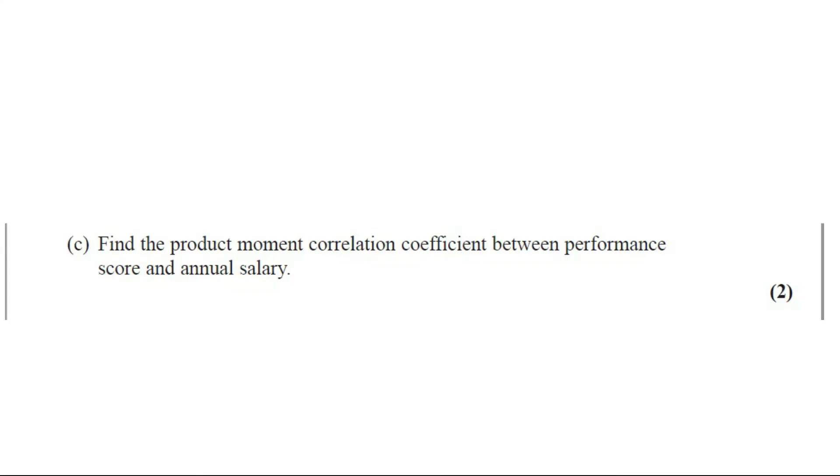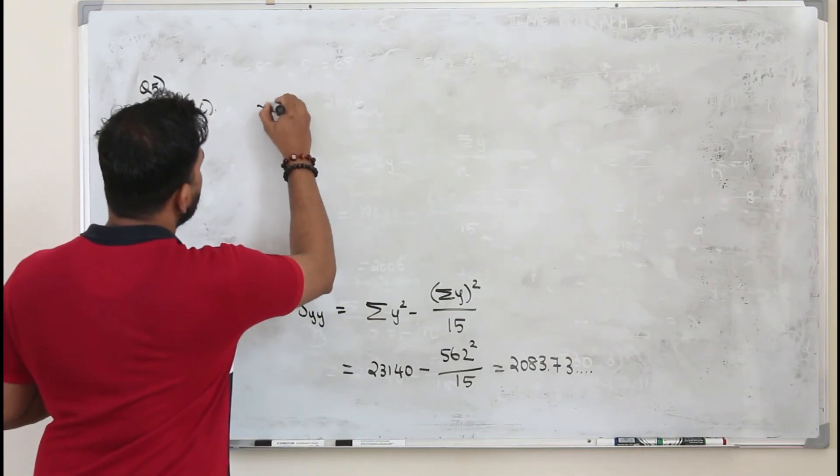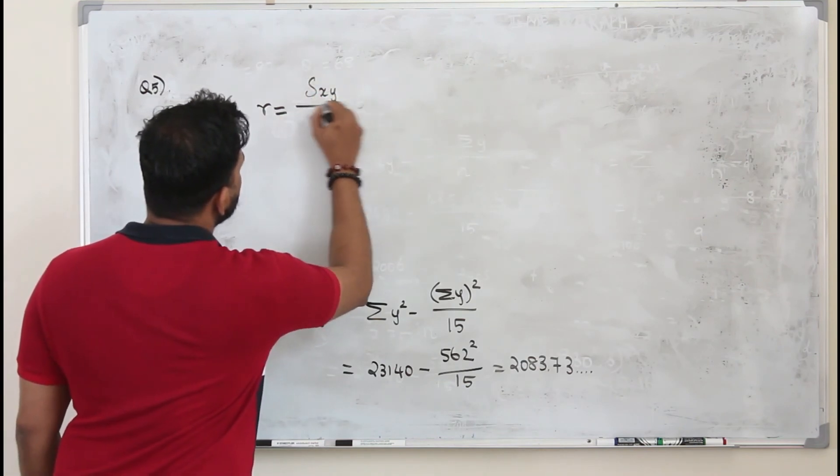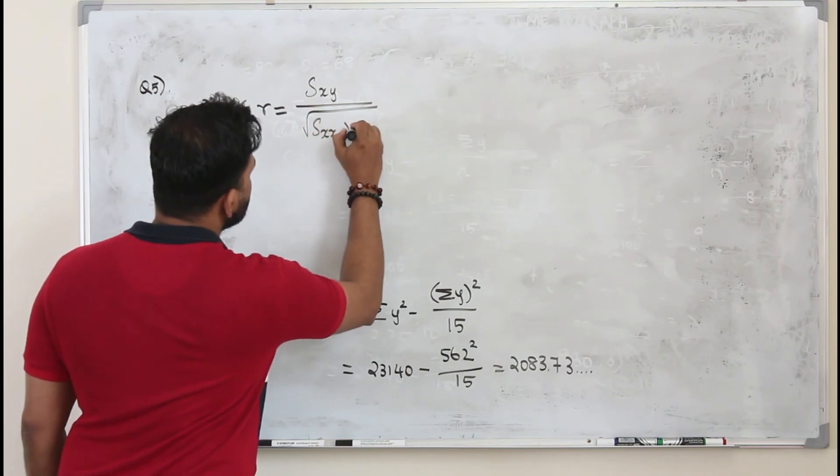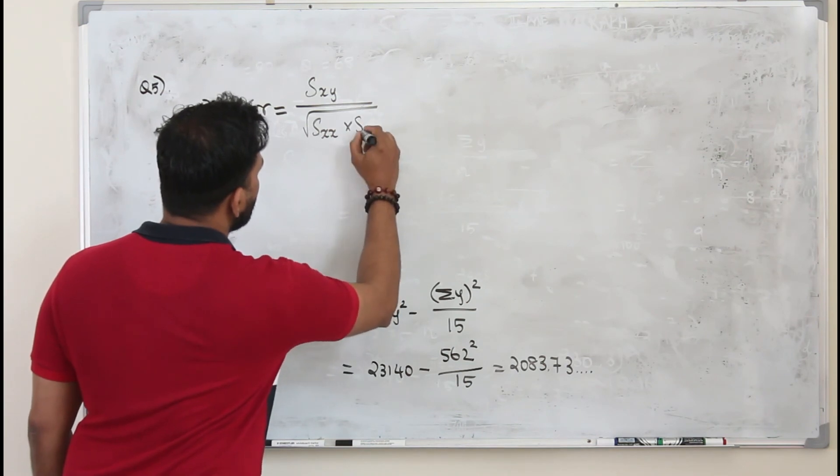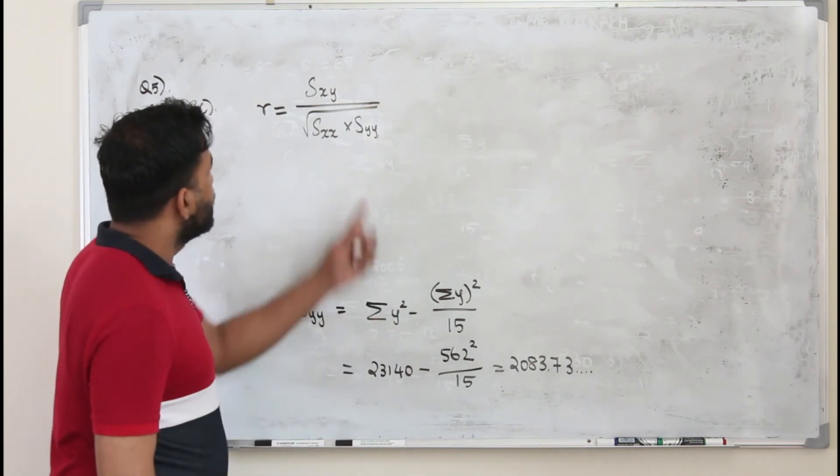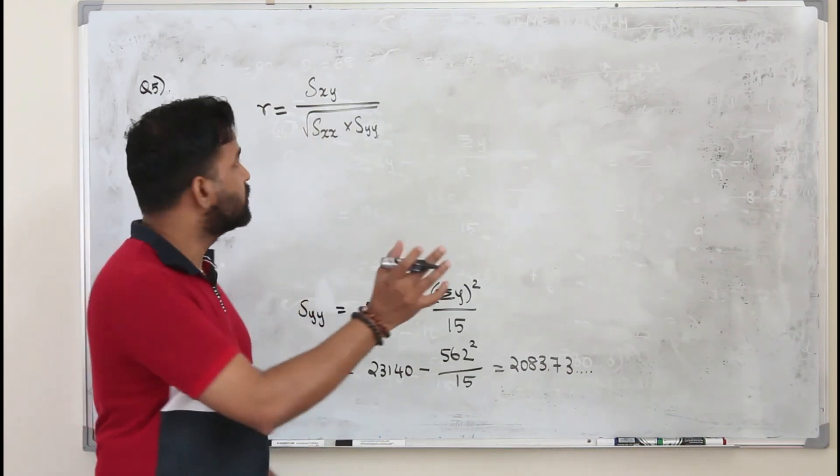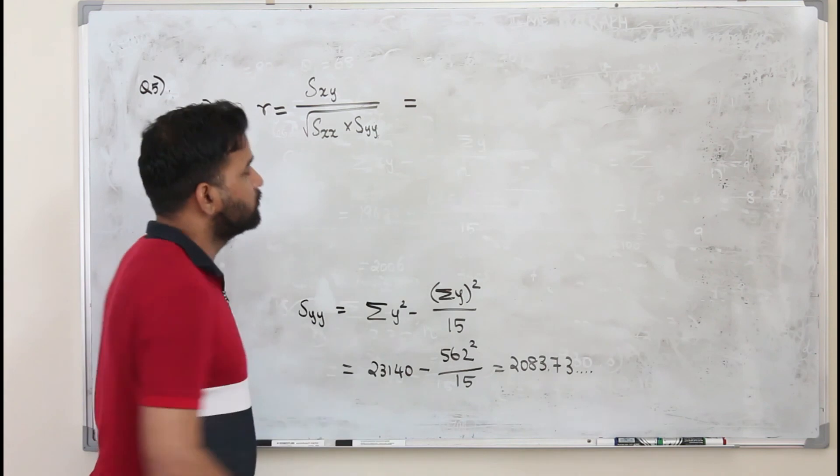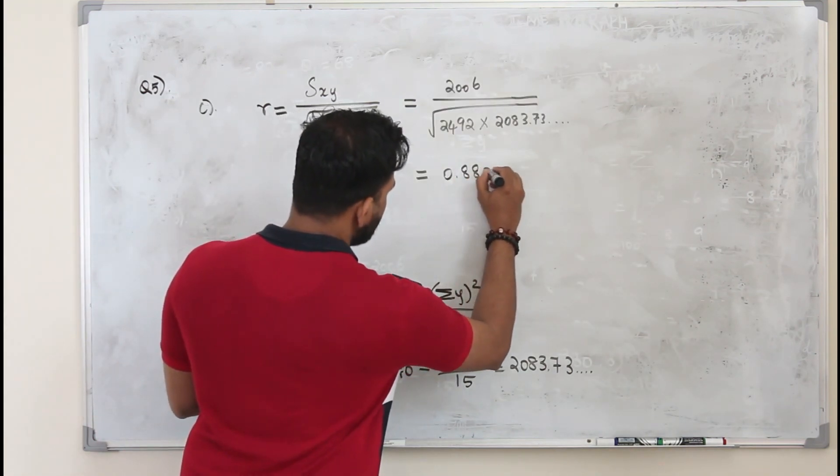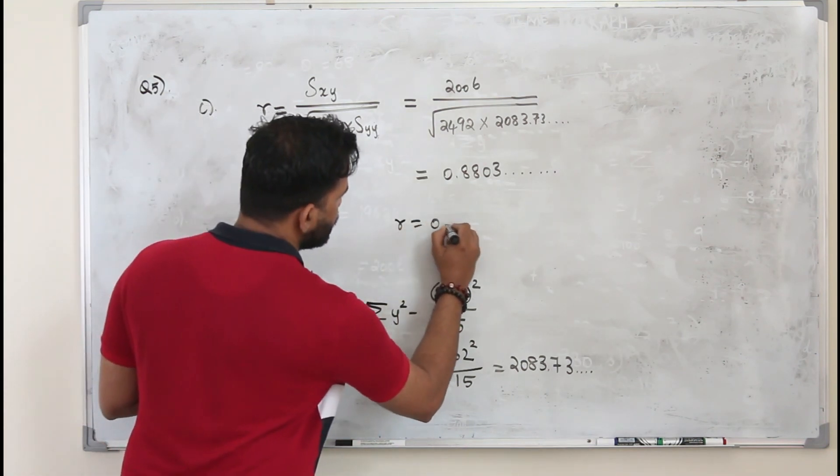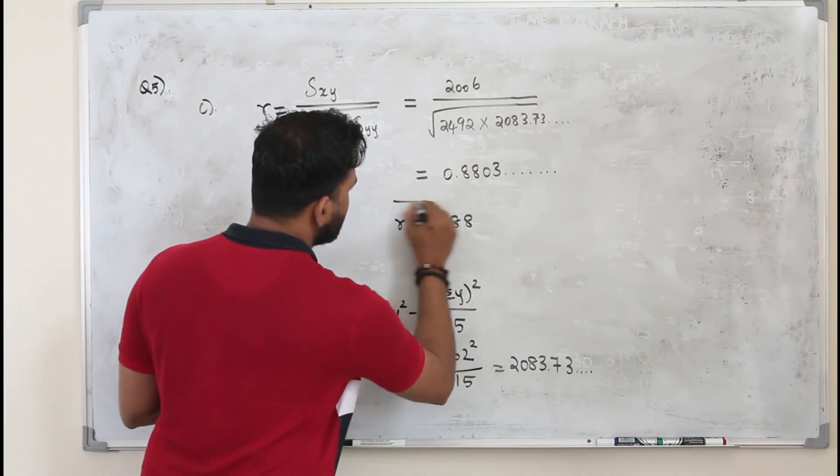Part C. Find the product moment correlation coefficient between performance score and annual salary. This question carries two marks. They want you to find R, the PMCC product moment correlation coefficient. The formula to find R is Sxy divided by square root of Sxx times Syy. We got Sxy and Syy in the previous part. Sxx is given in the question. Plug in all the values here, you get the value of R. So I got the value 0.88031. So R = 0.88. That's the PMCC. That's fine, it's easy.